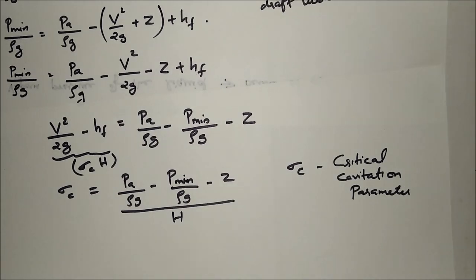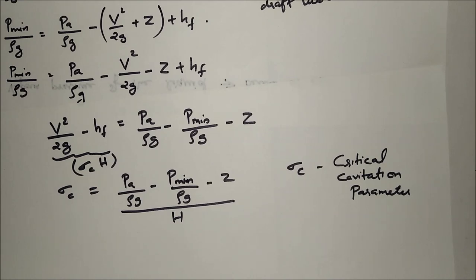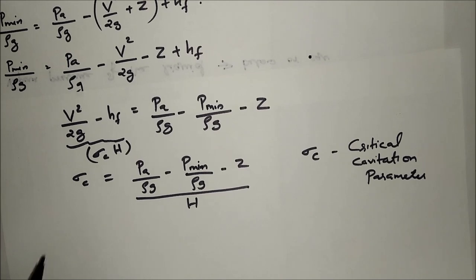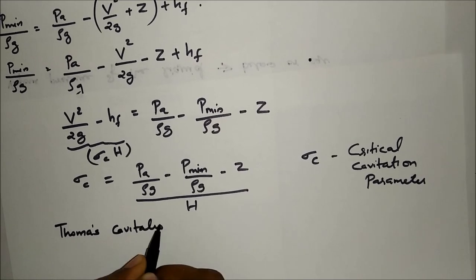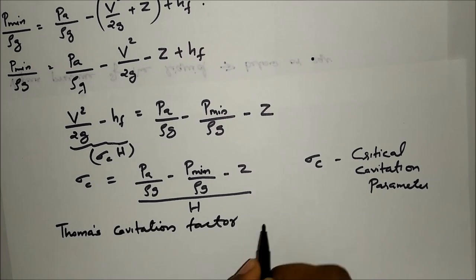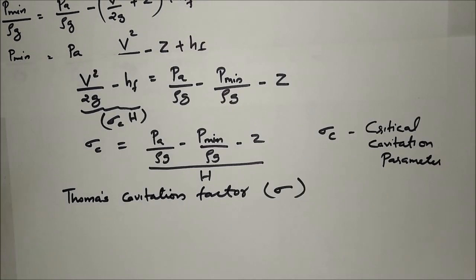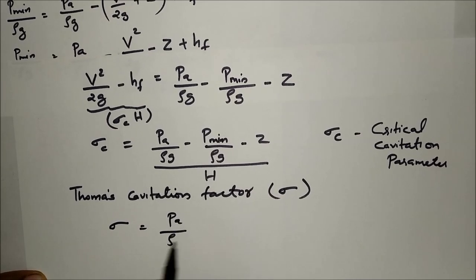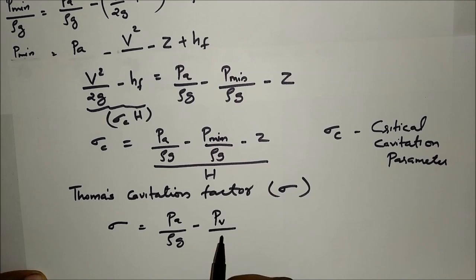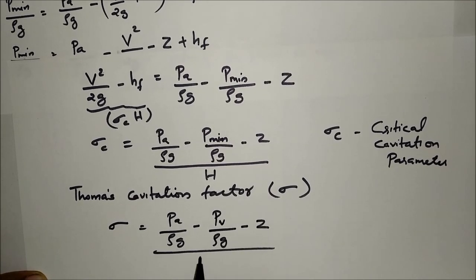Another term is the Thomas cavitation factor. In order to determine whether cavitation will occur in any portion of a reaction turbine, the critical value of the Thomas cavitation factor is calculated and represented by σ. Modifying the critical cavitation parameter gives the Thomas cavitation factor: σ = (p_a/ρg − p_v/ρg − z) / H.